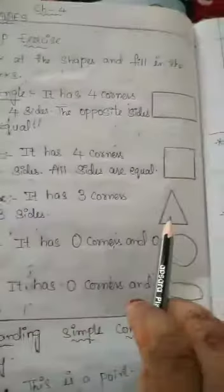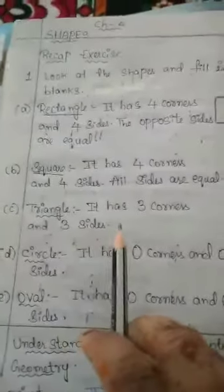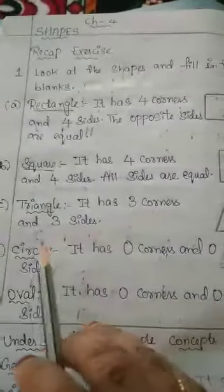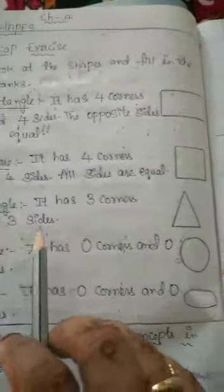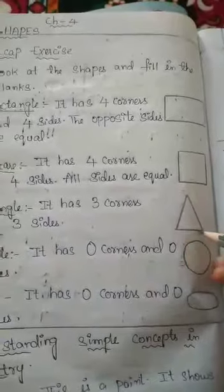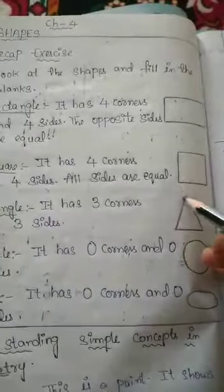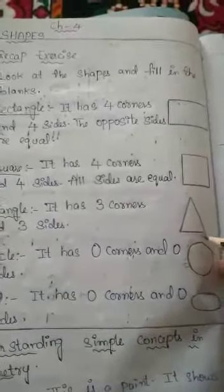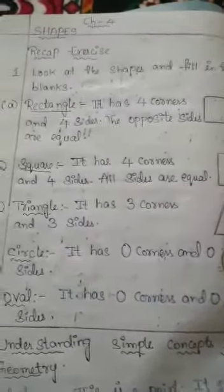Third is triangle. So this is the triangle. It has 3 corners and 3 sides — 1, 2, 3 corners and 3 sides.